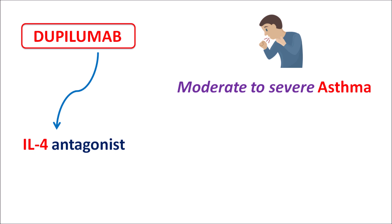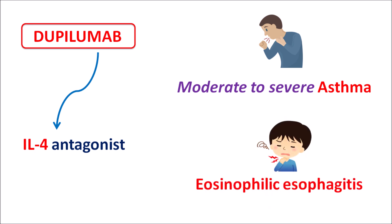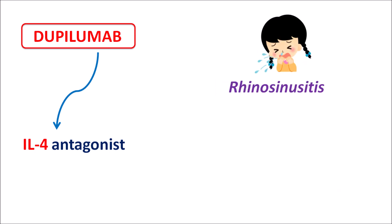This is particularly important in patients where asthma co-exists with eosinophilic activation. That's why this drug can also be used in conditions like eosinophilic esophagitis, where inflammation of the esophagus due to elevated levels of eosinophils can be controlled by dupilumab. Similarly, this drug can be used for rhinosinusitis, where there is swelling of the nasal pathway due to inflammation.